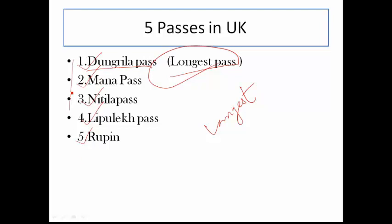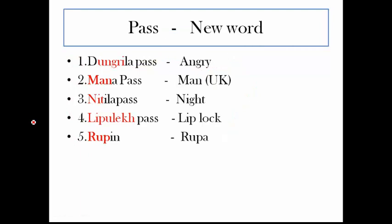Our target is to remember these five pass names. Dungrila pass — you can see U-N-G-R-I, its pronunciation is similar to 'angry,' so remember Dungrila pass as 'angry.' Mana pass — here you can see M-A-N, 'man,' so remember it as 'man, he is from UK' (UK meaning Uttarakhand). Nittila pass — N-I-T, pronunciation is 'night,' so remember Nittila pass as 'night.' Lipleic pass — you can easily remember it as 'lip lock.' Rupin pass — here you can see R-U-P, adding letter A gives pronunciation 'Rupa.'